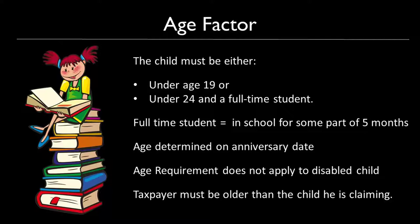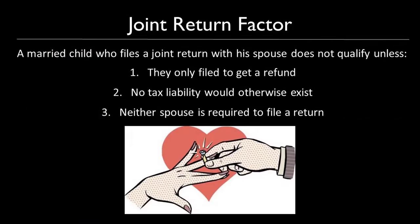Age is determined on the anniversary date. This was an issue when there were kids born on New Year's Day. A child born on January 1st will have lived 365 days on December 31st, so the rule now is that age changes on your anniversary date, or January 1st birthday — that's when you are a different age. However, the age requirement does not apply to a disabled child. You can always claim the dependency exemption for the qualifying child test for a disabled child, no matter what their age.